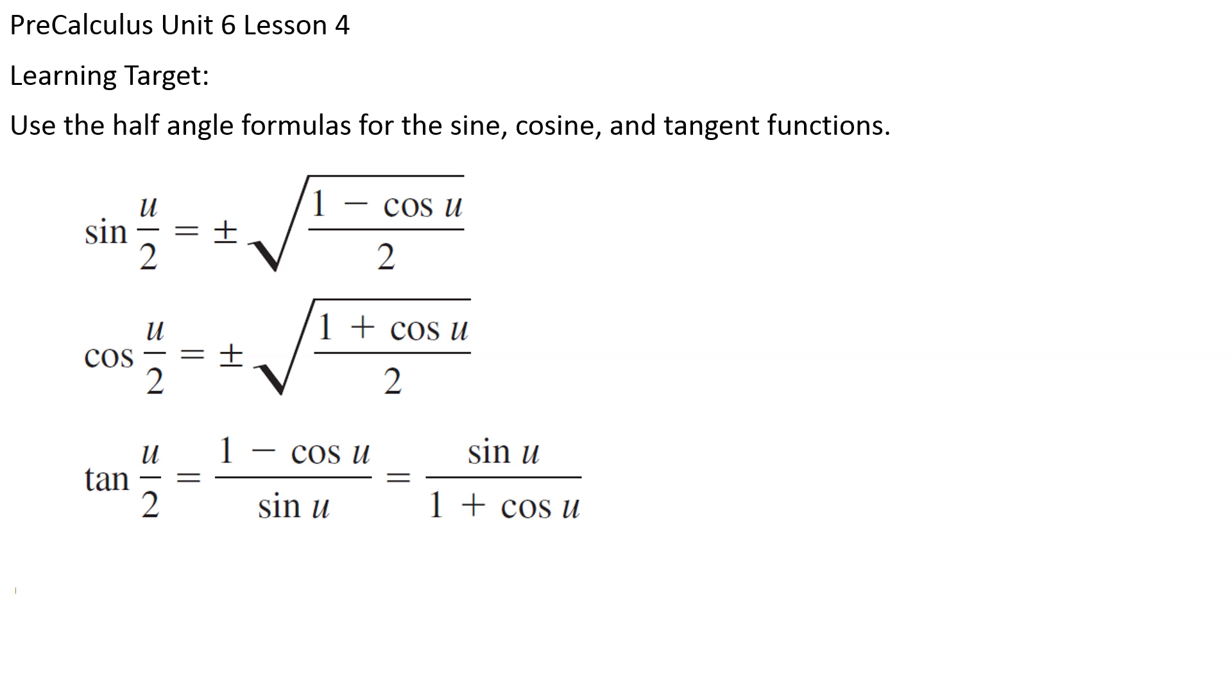Now, a word about that plus or minus on the sine and cosine functions. The sign depends on the quadrant we're in, right? Not the quadrant of u, but the quadrant of u over 2.